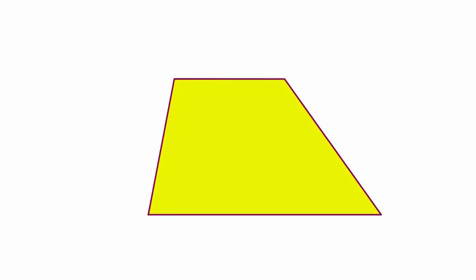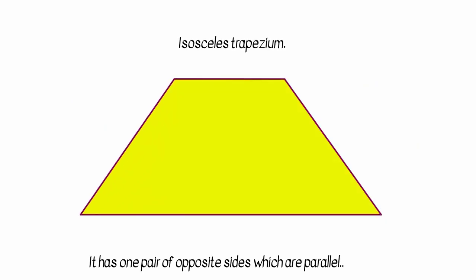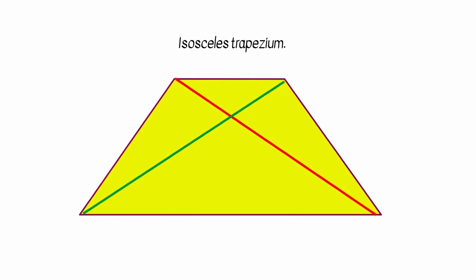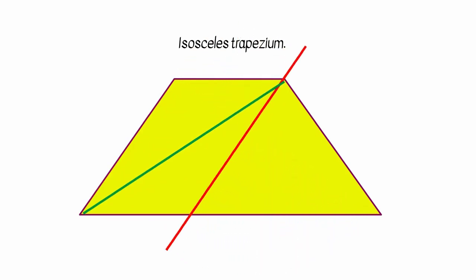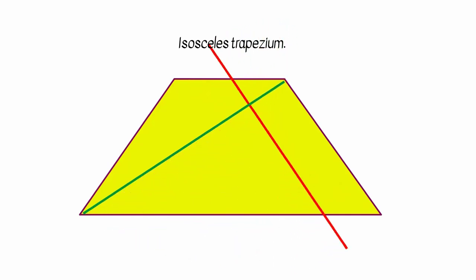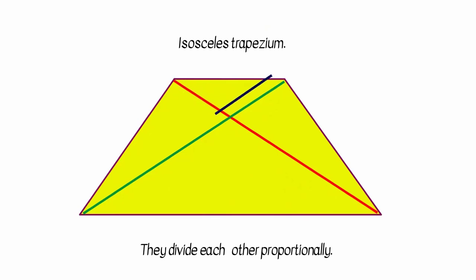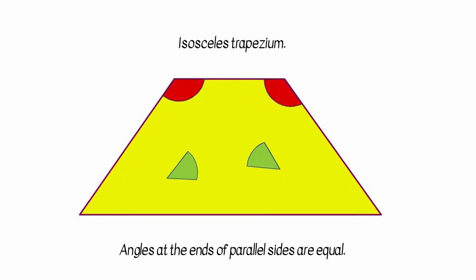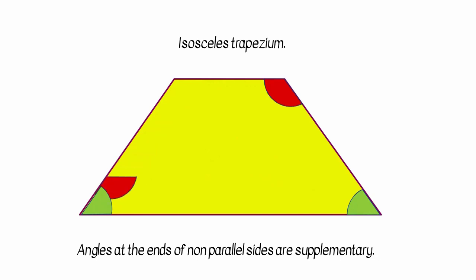If the non-parallel sides of a trapezium are equal, then we will get an isosceles trapezium. Hence an isosceles trapezium has one pair of opposite sides which are parallel, and a pair of opposite sides which are equal and non-parallel. The diagonals of an isosceles trapezium are equal and they divide each other proportionally. The angles at the ends of each parallel sides are equal, and the angles at the ends of each non-parallel sides are supplementary.